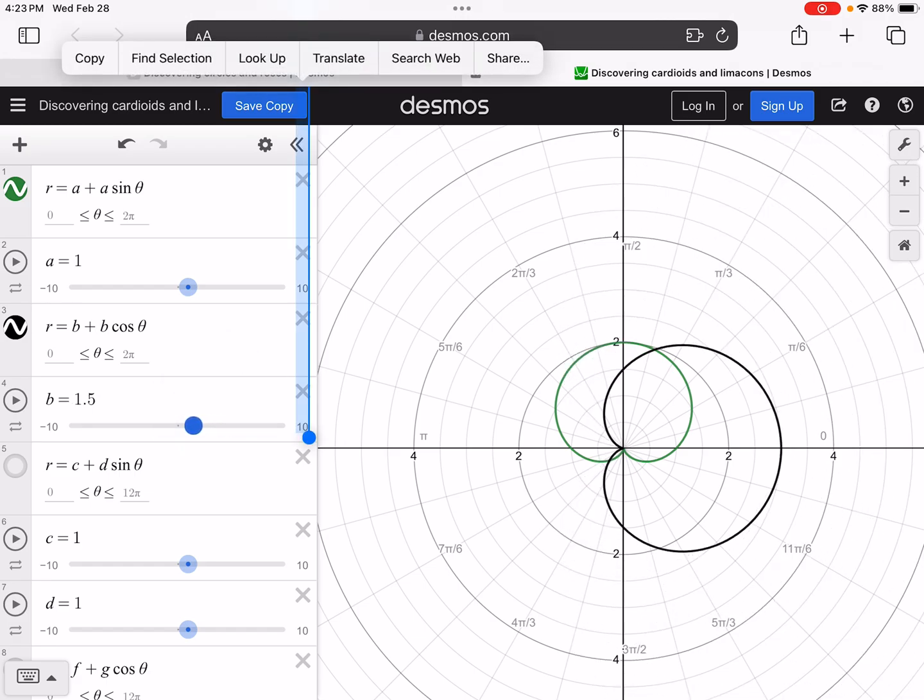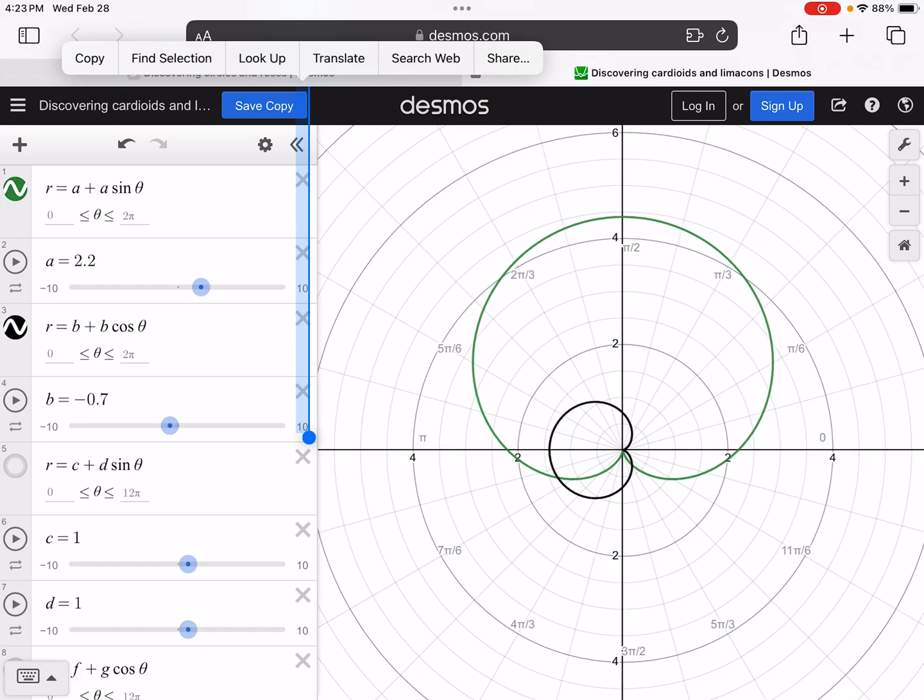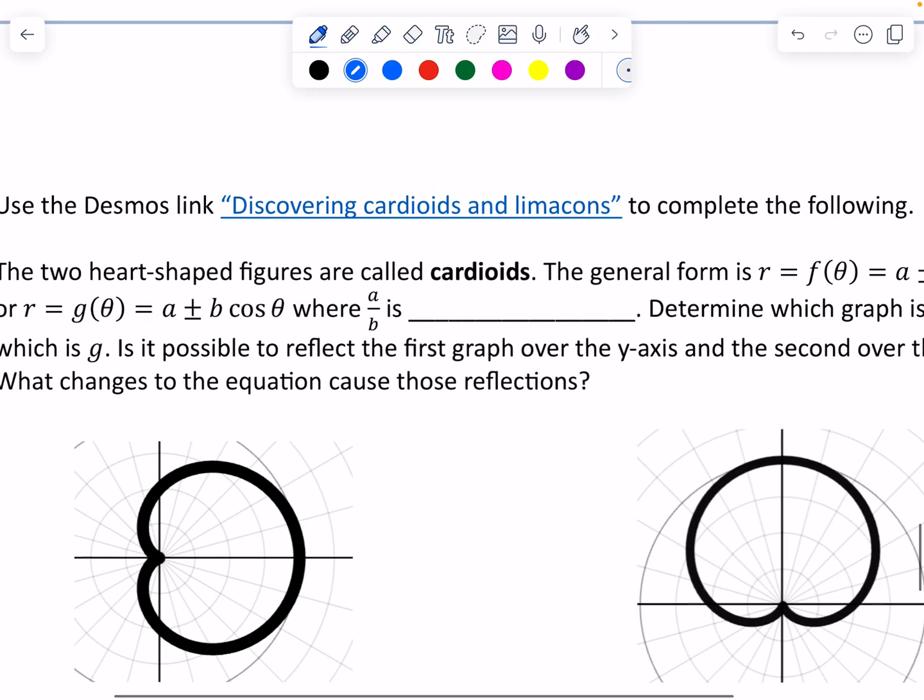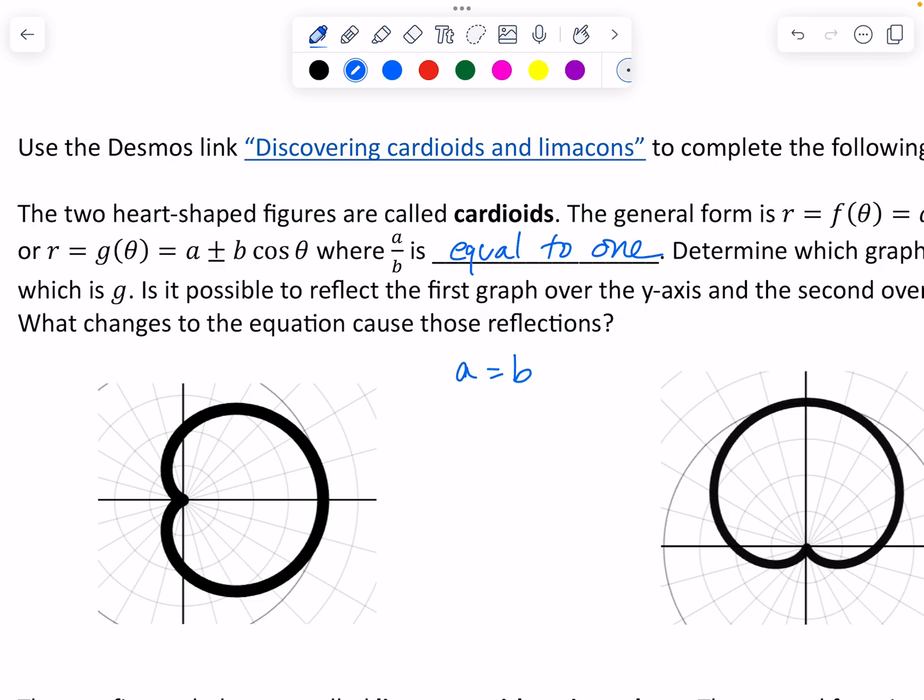And the cosine one is going to include a point that's on what we would consider the x-axis. What happens when we make it negative? Well, then look at that, it flips over to the other side. Same idea over here, whoa! Okay, so this is, so what happens with a cardioid is A over B, where A over B is, well, okay, where A over B is equal to 1. Okay, in other words, A equals B.